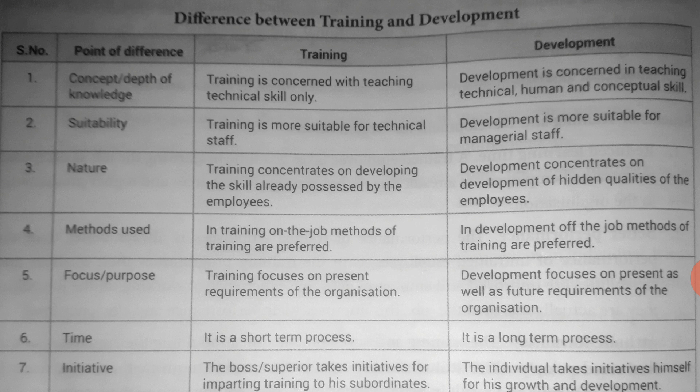Next is initiative. Training ka jo initiate karta hai, means pehle kaun karta hai — woh boss karta hai, superior karta hai. Boss kaise karega? Boss yeh judge karega ke jo hamara subordinate hai, matlab jo junior hai, us ke andar kuch khamiyan hain. Un khamiyon ko door karne ke liye boss yeh decision leta hai ke isko training di jaye. Development ke andar jo initiative leta hai woh koi bhi individual khud se leta hai — agar main ek employee hoon aur kisi company mein kaam kar raha hoon, to main apne liye khud initiative karunga, pehle karunga, aur apne aap ko develop karunga. Main apni personality, behavior, knowledge, aur skills sab develop karunga.